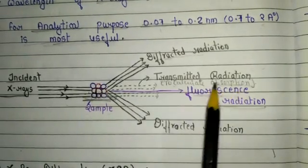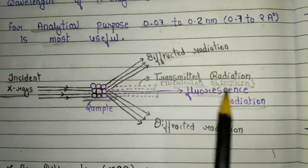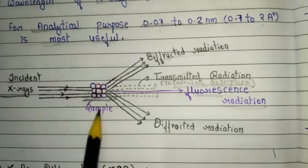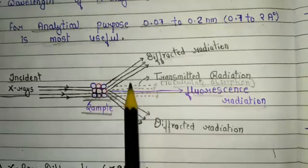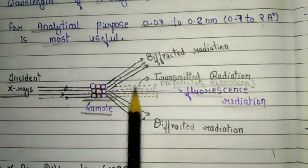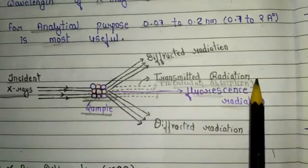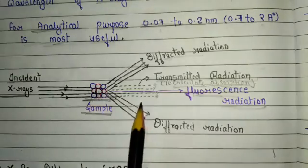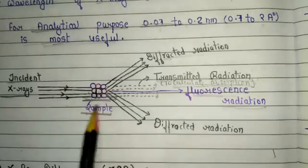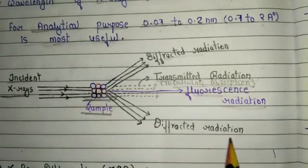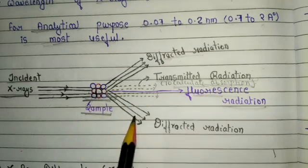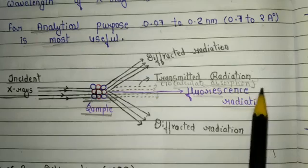The second type is transmitted radiation, which is used to calculate absorption. When incident X-ray strikes the sample, some radiations are absorbed by the sample, and the rest come out as transmitted radiation. So absorption equals incident radiation minus transmitted radiation — basically, the sample absorbs some radiation, and these are called absorption radiations.